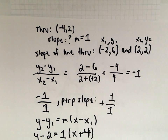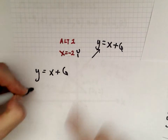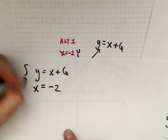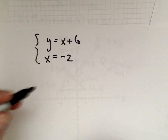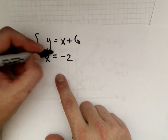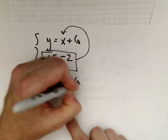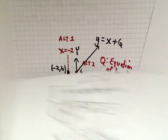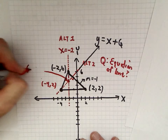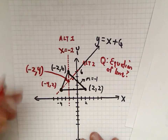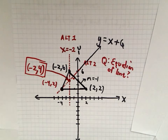Now we can set up a system of equations: y equals x plus 6, and x equals negative 2. We simply substitute x equals negative 2 into the first equation: y equals negative 2 plus 6, which gives y equals 4. So we now know that the two altitudes cross at x equals negative 2, y equals 4.